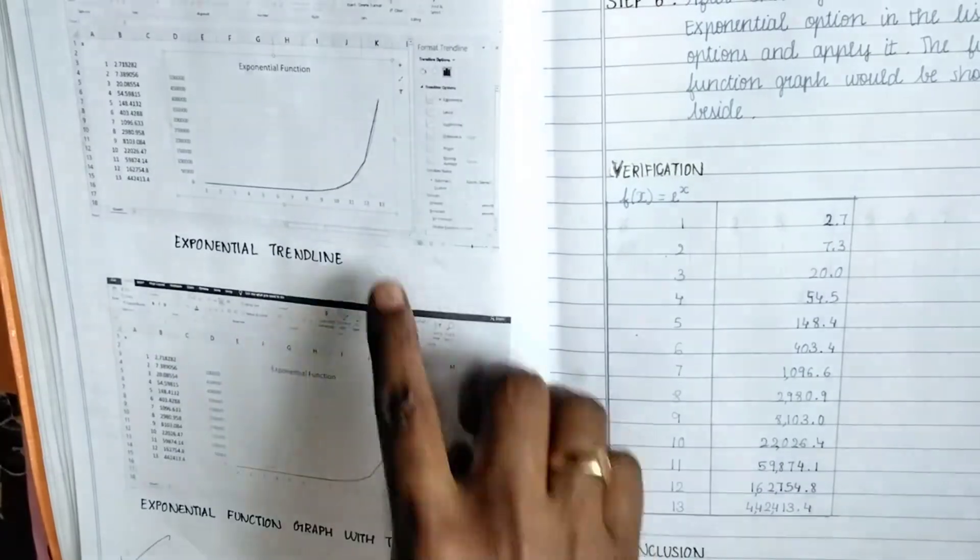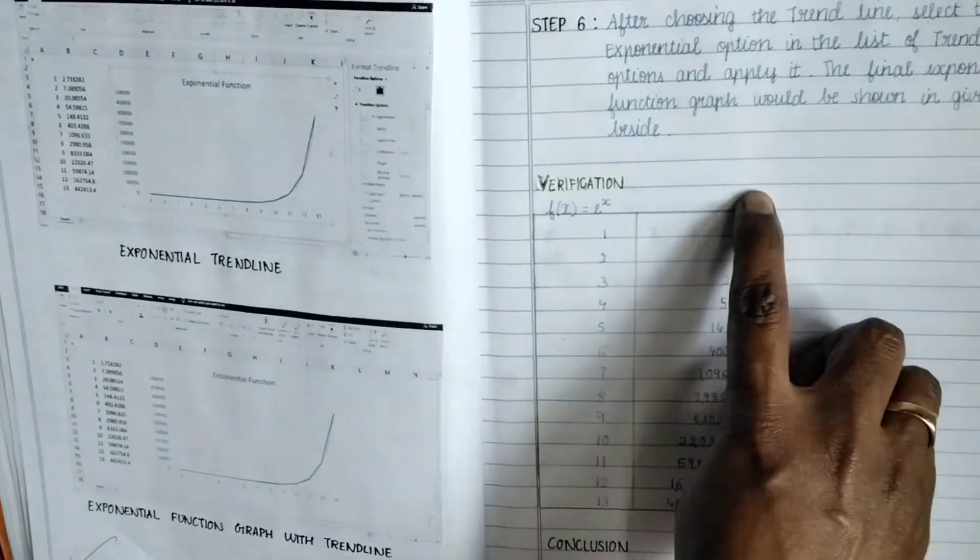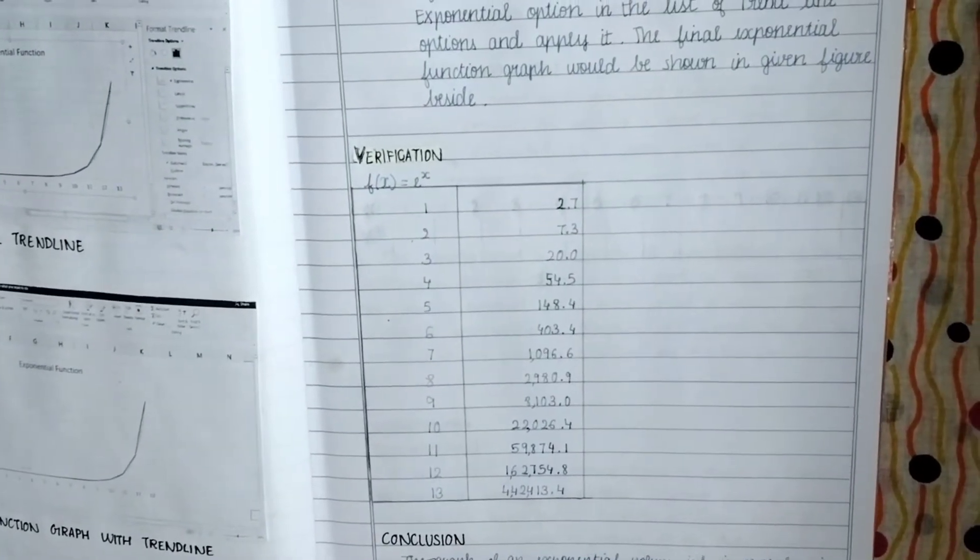And then see exponential, this is the trend line of the exponential graph. Verification is done here. Parallelly we gave one, two, three, four, we calculated what is e^x, and with that we plotted the graph in the first page. So that is, then the conclusion.